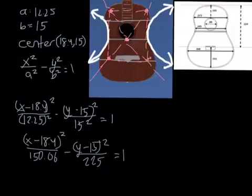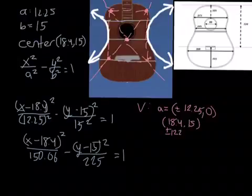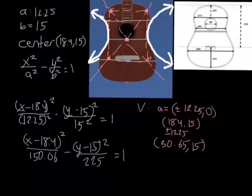From here, we can find our vertices. Our vertices are based off of our x-axis, so it would be based off our A value. They would be plus or minus 12.25. So we add that to our center: 18.4 plus or minus 12.25. For your vertices, they would be (30.65, 15) and (6.15, 15).